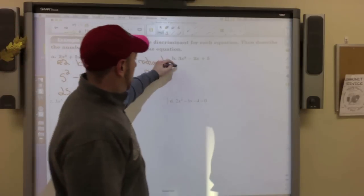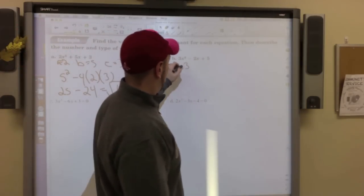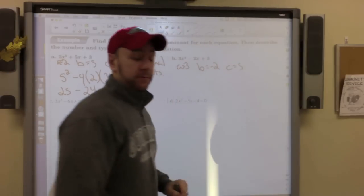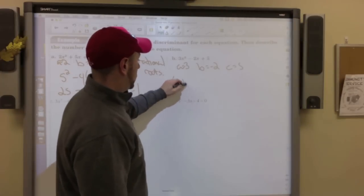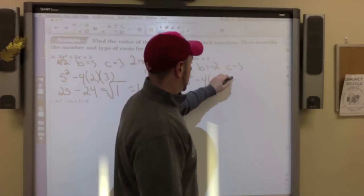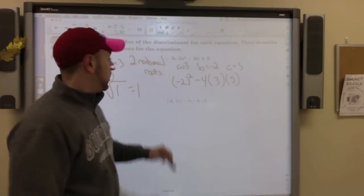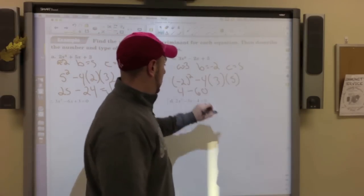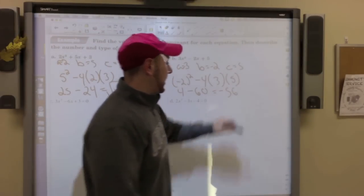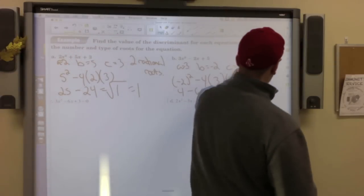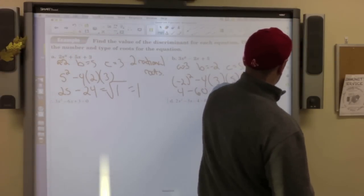The next one: a is 3, b is negative 2, c is 5. Negative 2 squared minus 4 times 3 times 5. 4 minus 60, negative 56. Every time I have a negative, two complex roots. You're not solving anything. You're just classifying them.